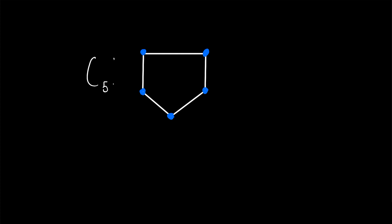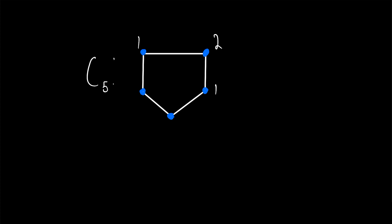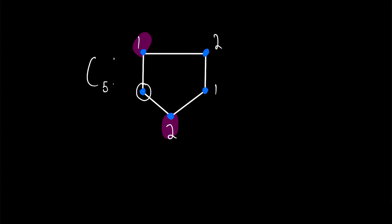We might start at this vertex and decide that we'll color it or label it as one. Then this vertex can't be labeled one since it's adjacent to this vertex, but we could call it two. This vertex can't be labeled two since it's adjacent to this vertex, but there's nothing stopping it from being labeled one. This vertex is adjacent to one, so it can't be labeled one, but we can label it two. And then this last vertex is adjacent to a vertex colored one and a vertex colored two, so we've got to bring in a third color — we'll color it three.